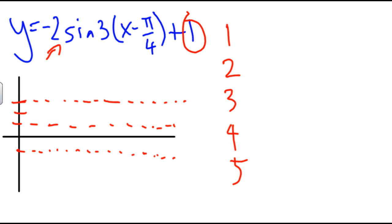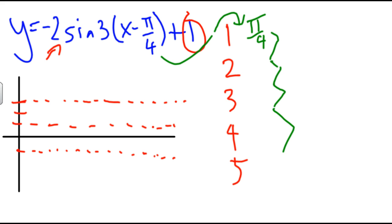Now, how do I figure out where I'm going to put them on the x-axis? We know that the h value from my equation will always be the first x on my x-axis, so pi over 4 is my first x value. Now, to create the next four points, I need to divide my period equally amongst those four points, so I need to find my period. The formula for period is 2 pi over b.